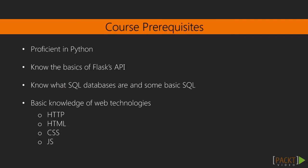This course has some prerequisites. This course assumes you already have an intermediate knowledge of Python 3.5. I also assume that you will understand enough of Flask's API to create a single web app. SQL databases are going to be used to great effect in this course, so understanding what they are and how to write SQL is necessary. Finally, it's also assumed that you have at least some understanding of how web technologies like HTTP, HTML, CSS, and to a lesser extent, JavaScript work. So that'll be our web stack for this course.